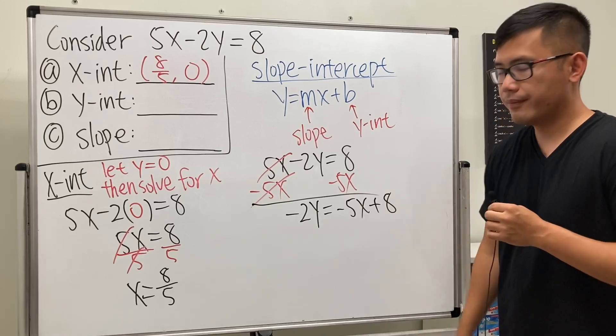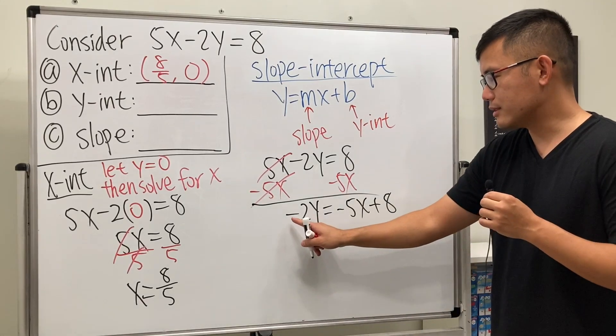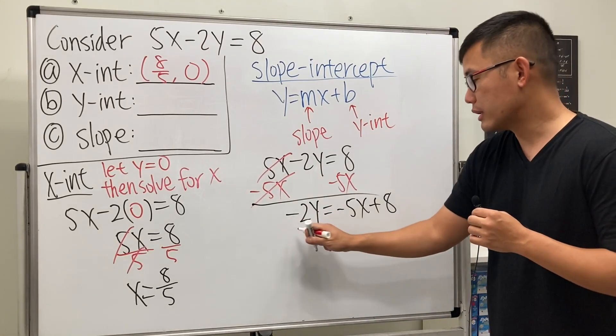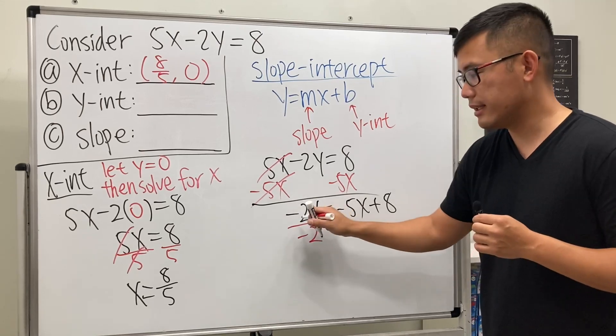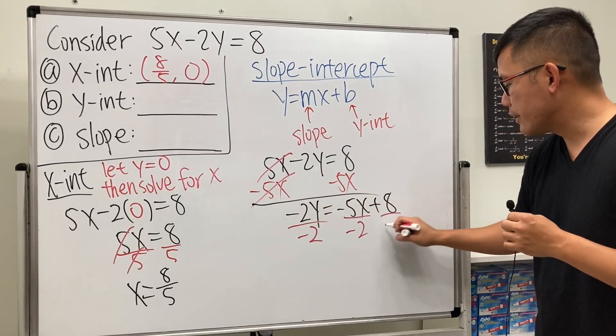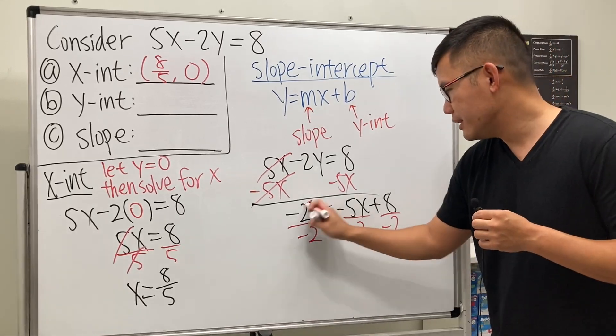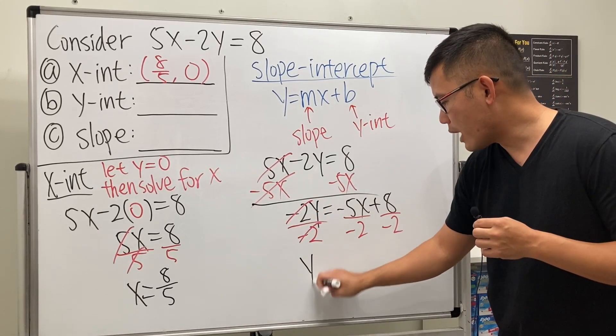So we have -2y = -5x + 8. Since this is -2 times y, we divide everything by -2—do it here, here, and here—so they cancel, and we get y equals